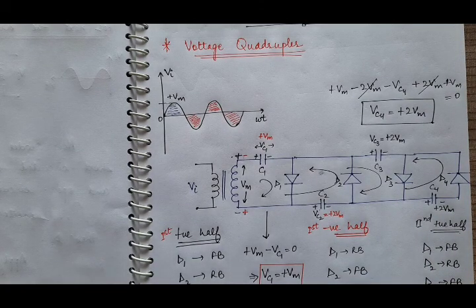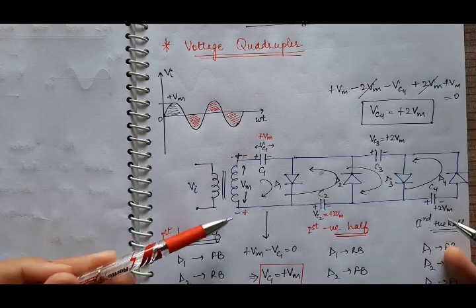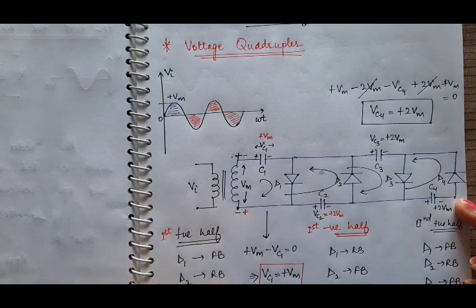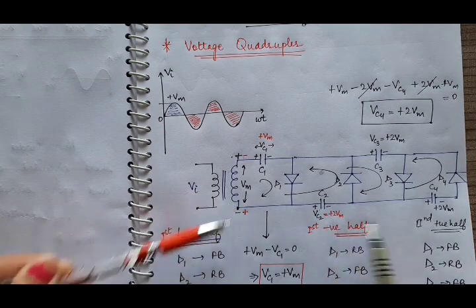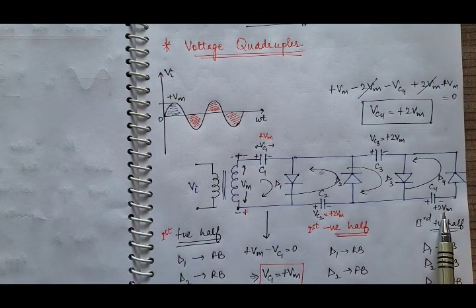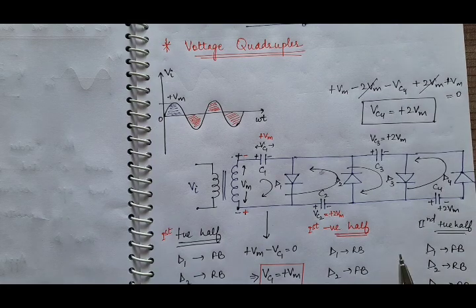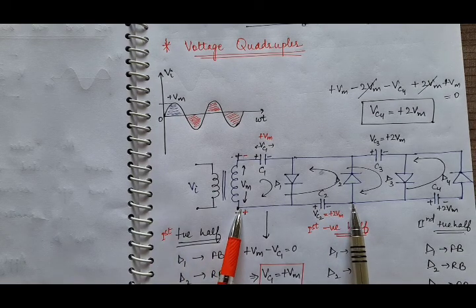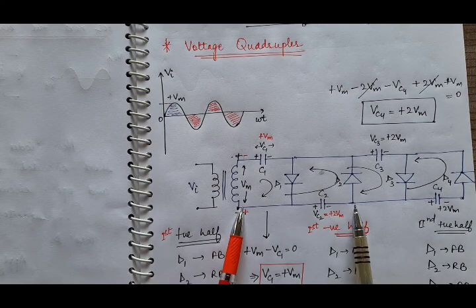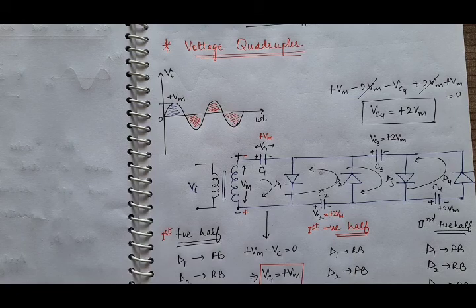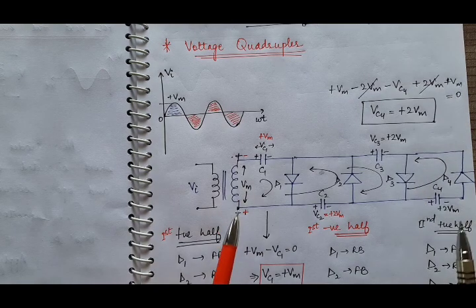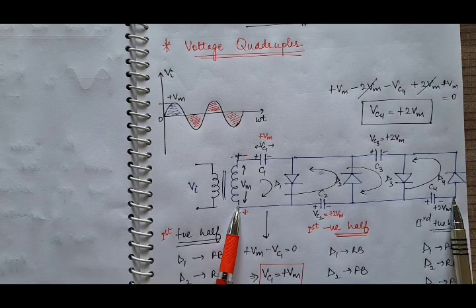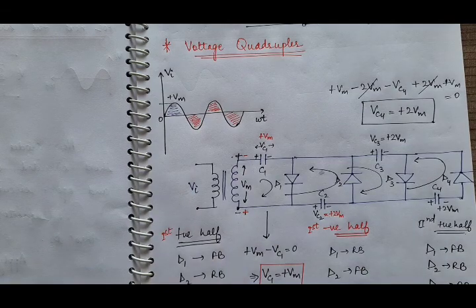After the second negative half cycle, if you take the output across these two ends, it equals VC2 plus VC4: plus 2Vm plus 2Vm equals 4Vm. This circuit of the voltage quadrupler can also act as a voltage doubler — if you take the output between two specific terminals, the output is plus 2Vm. It can also act as a voltage tripler if you take the output between other terminals: plus Vm plus 2Vm equals plus 3Vm. And taking the output across the full circuit gives plus 4Vm, acting as a voltage quadrupler. This is all about voltage multiplier circuits.